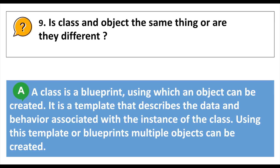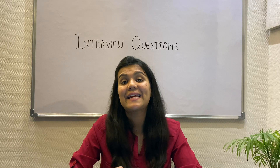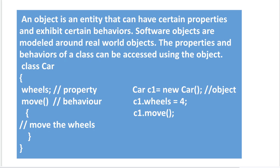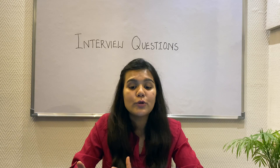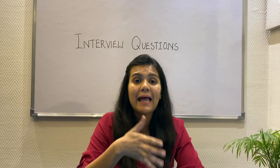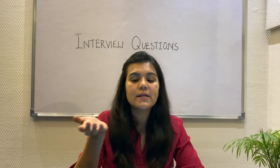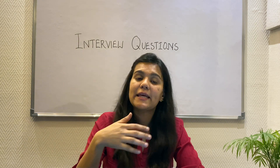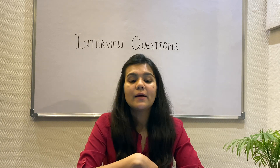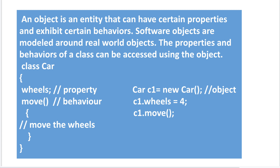Moving on: Is class and object the same thing or are they different? A class is a blueprint using which an object can be created — a template that describes the data and behavior associated with the class, from which you can create multiple objects. While an object is an entity with certain properties that exhibits certain behaviors. Software objects are modeled around real-world objects such as a car, scooter, laptop, pen, board, plant, or person — all real-world entities that can also be translated into software objects. The properties and behaviors of a class can be accessed using these objects.